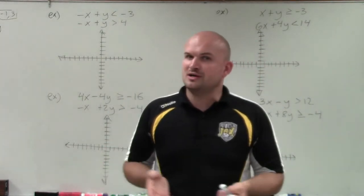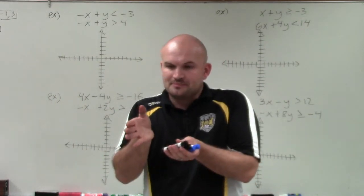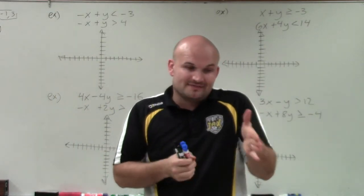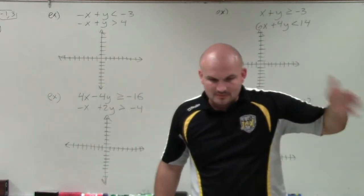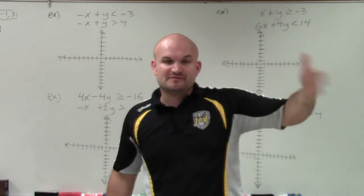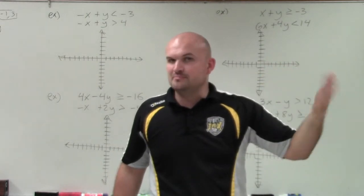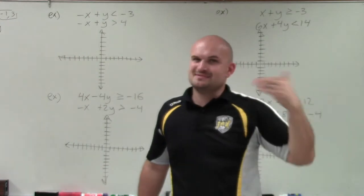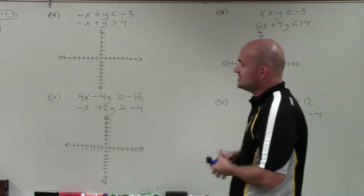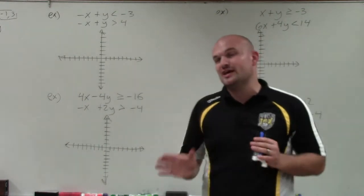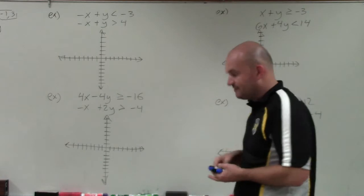I'll use test points for at least one of them, but then I'll also go into shortcuts. Remember, when we have an equation set equal to y — when y is on the left-hand side — if it's greater than, it's going to be above the line, and if it's less than, it's going to be below the line. That's the shortcut, and I don't want to make this video too long.